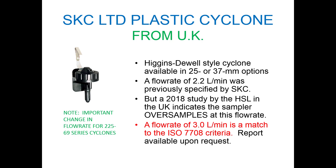SKC Limited in the UK manufactures a Higgins dual style cyclone available in a 25 or 37 millimeter design. A flow rate of 2.2 liters per minute was previously specified by SKC to meet the ISO 7708 criteria, but a 2018 study by the Health and Safety Laboratory in the UK indicates the plastic cyclone oversamples at this flow rate relative to the criteria. A flow rate of 3.0 liters per minute is now specified to match ISO 7708. The test report is available upon request.